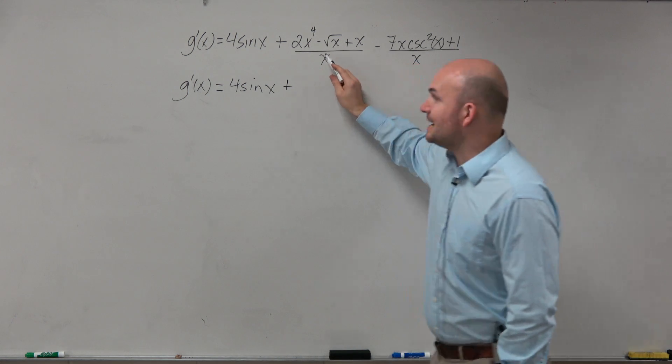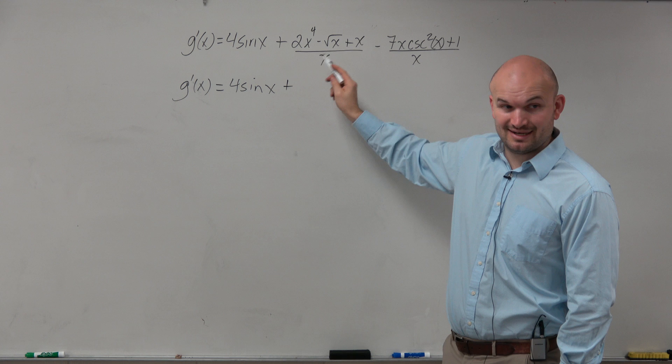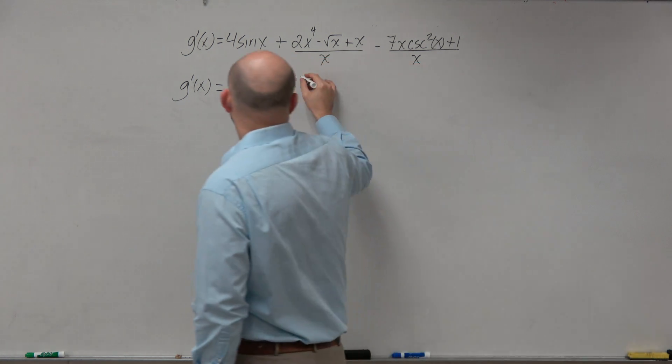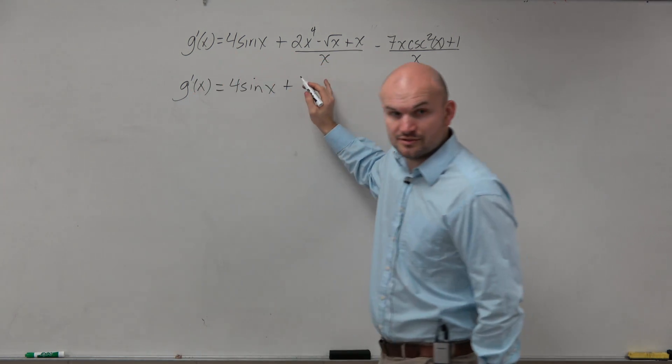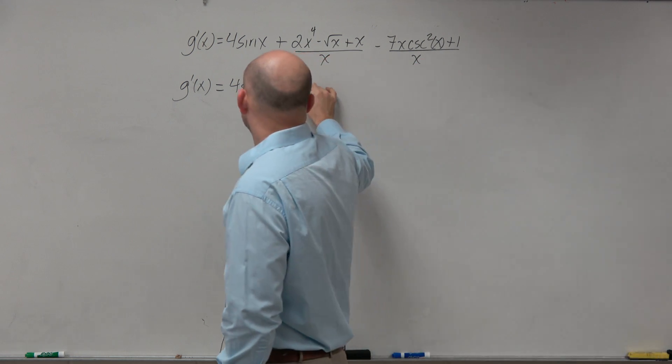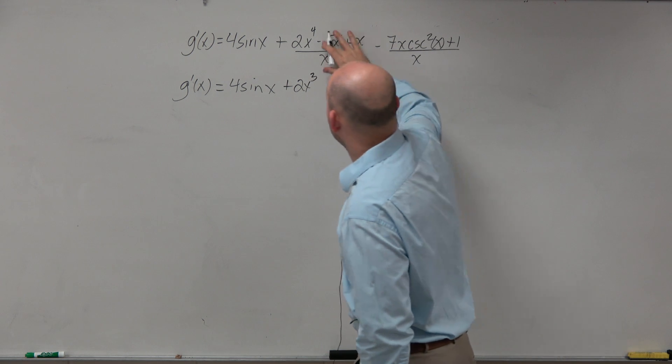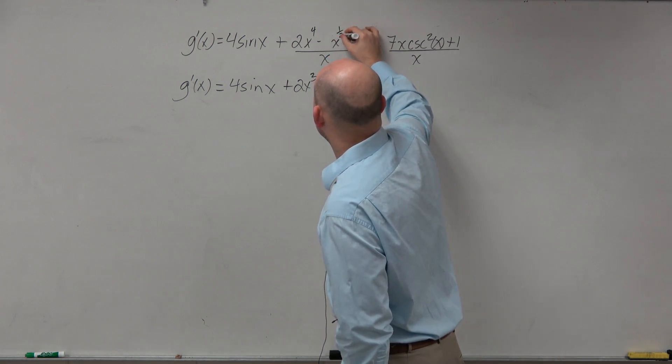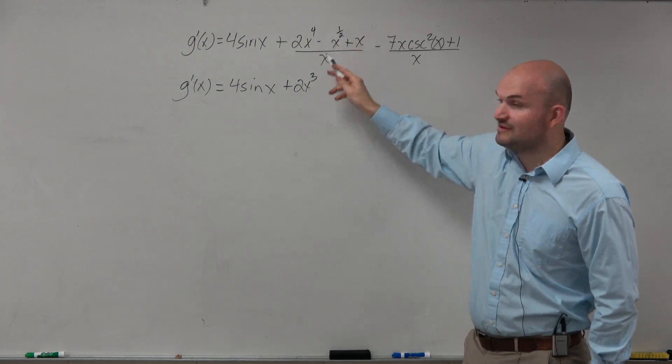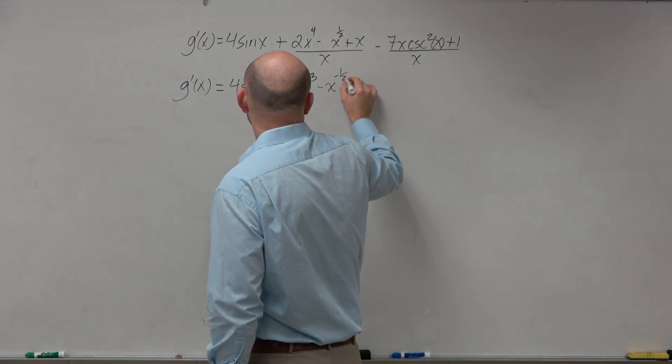Over here though, this x - see how each one of these terms are separated by addition and subtraction? That means that x is divided into each one of those. So therefore, this would be 2x cubed. This is technically x to the 1 1⁄2 power, so I could rewrite that. And then remember when you are dividing exponents, you're subtracting. So this turns into a minus x to the negative 1 1⁄2.